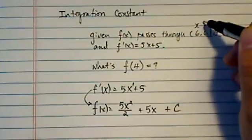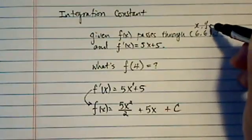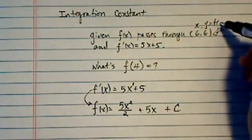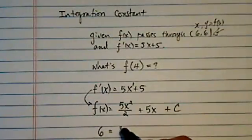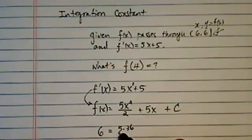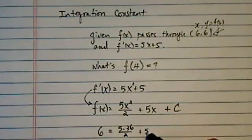That's to say if x is equal to 6, then y is equal to 6, or f of 6 is equal to 6. Let's plug it in there. 6 is equal to 5 times 36 divided by 2 plus 5 times 6 plus constant.